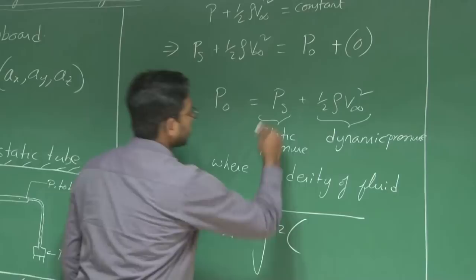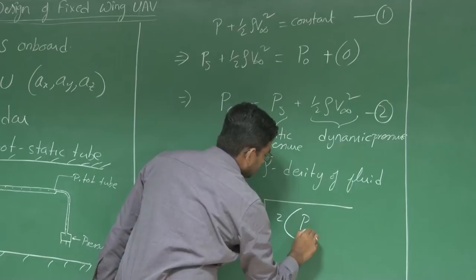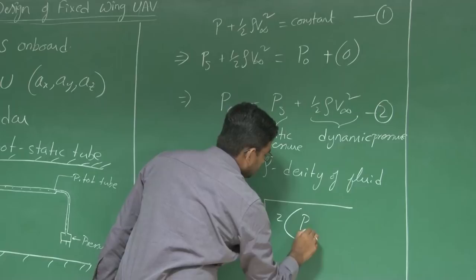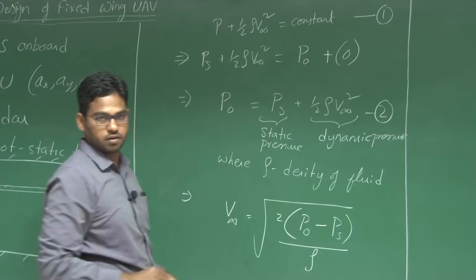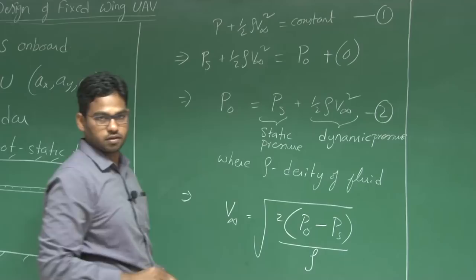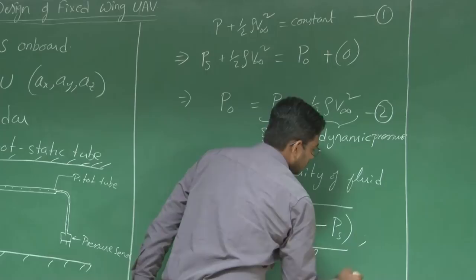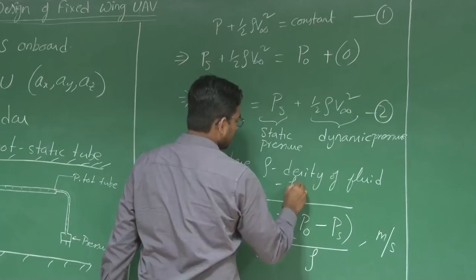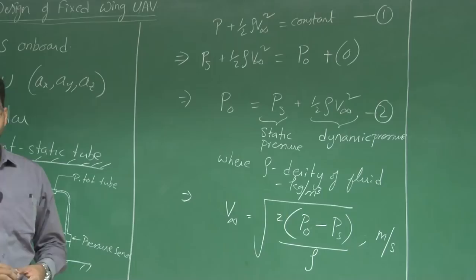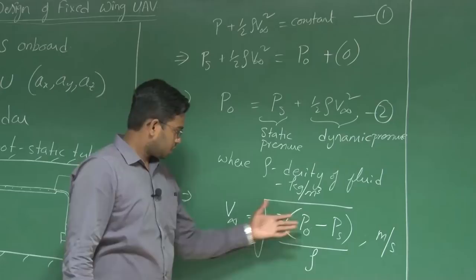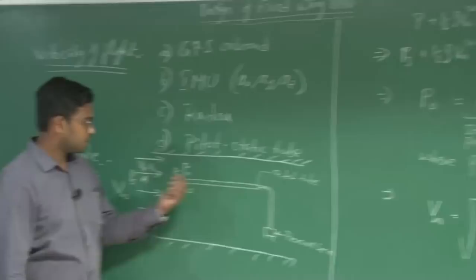Rearranging the equation, you can measure the velocity by measuring the differential pressure and the density. From this equation, you get velocity in meters per second, where ρ has units of kg/m³ and P is in N/m². To calculate V∞, you need to know P₀, Ps, and ρ.